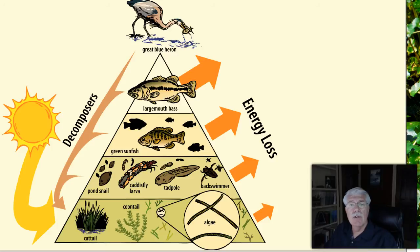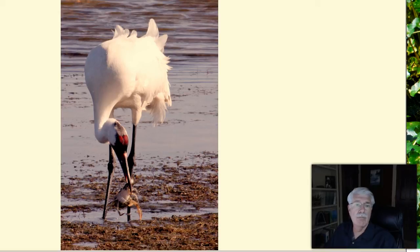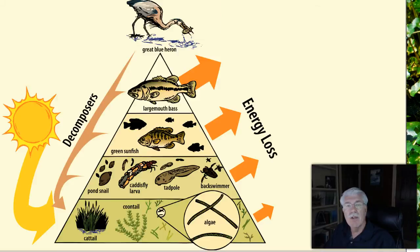An example of lost energy happens when a whooping crane eats a blue crab. The crane gets any energy that's in the crab's body when it gets eaten. But the crane doesn't get the energy that the crab spent that day walking on the bottom and swimming around the wetland using its swimming legs before it was eaten. That energy is lost. An energy pyramid illustrates this lost energy by showing each higher trophic level having a smaller volume than the one below it.